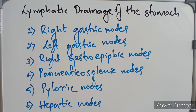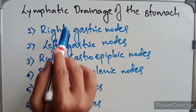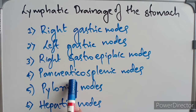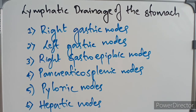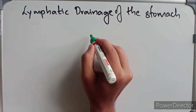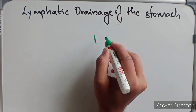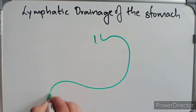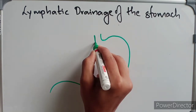The lymphatic drainage of the stomach includes the right gastric nodes, left gastric nodes, right gastroepiploic nodes, pancreatic splenic nodes, pyloric nodes, and hepatic nodes. I am drawing the stomach, showing the inferior end of the esophagus, to illustrate how these nodes are drained.